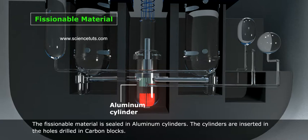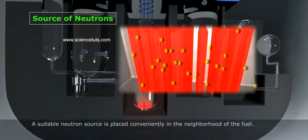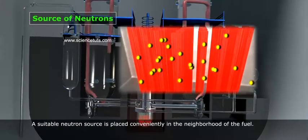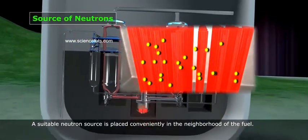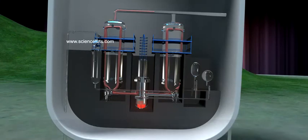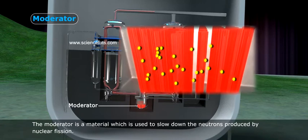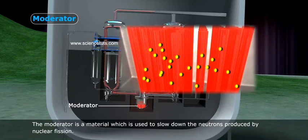Three, moderator: The moderator is a material which is used to slow down the neutrons produced by nuclear fission.